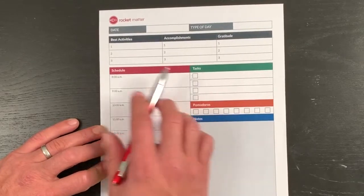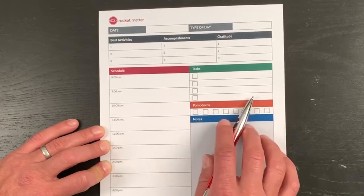Then, tasks. These are things that aren't major, but maybe I need to pay a bill or something like that. I write my tasks down here.